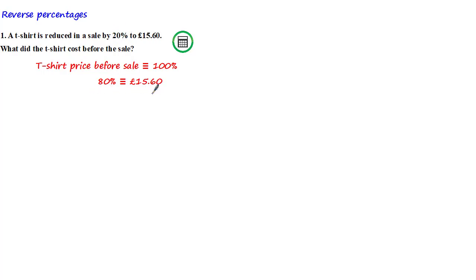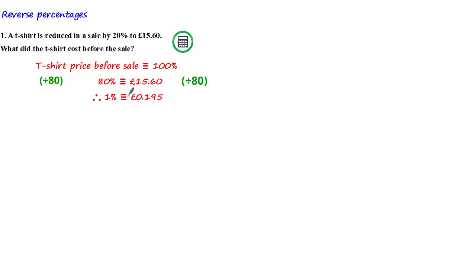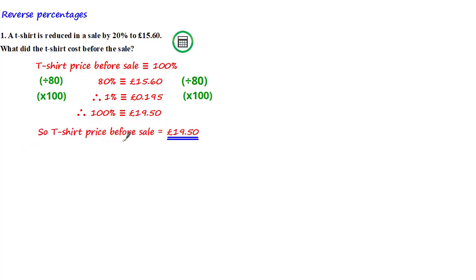From here we need to work out what 100% of the price is equivalent to. We can do this by dividing both sides of the equivalence by 80, to give us 1%. Therefore 1% is equivalent to 19.5p — we're not going to round this as we haven't yet come to the end of the calculation. To get 100% we times both sides by 100, giving us that 100% is equivalent to £19.50, and therefore the t-shirt price before the sale is £19.50.